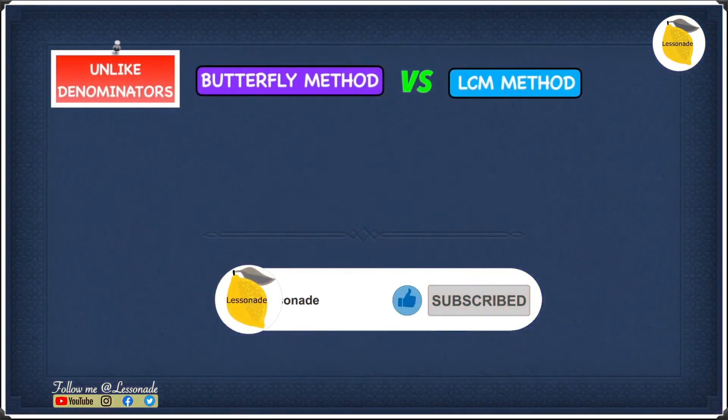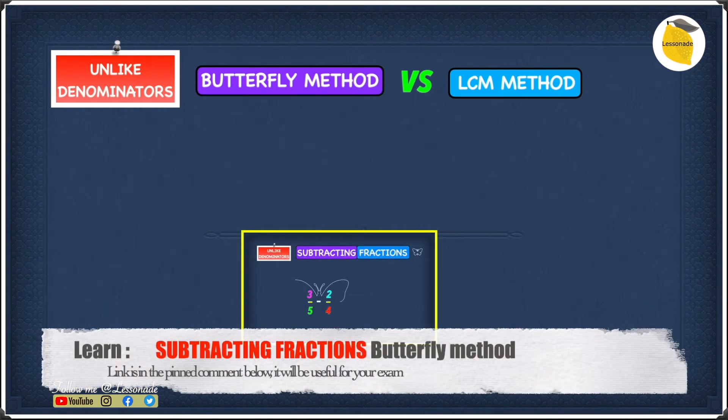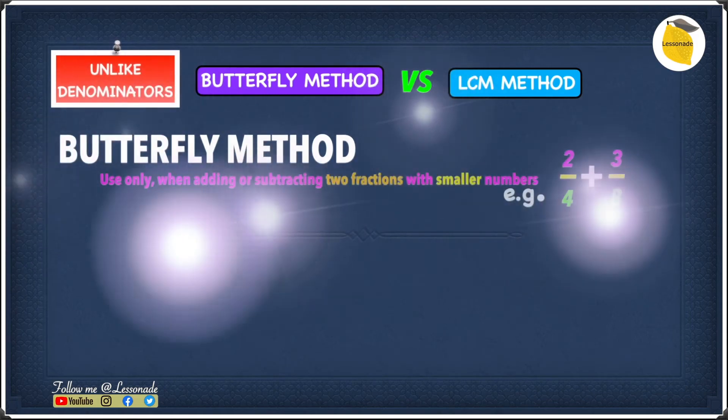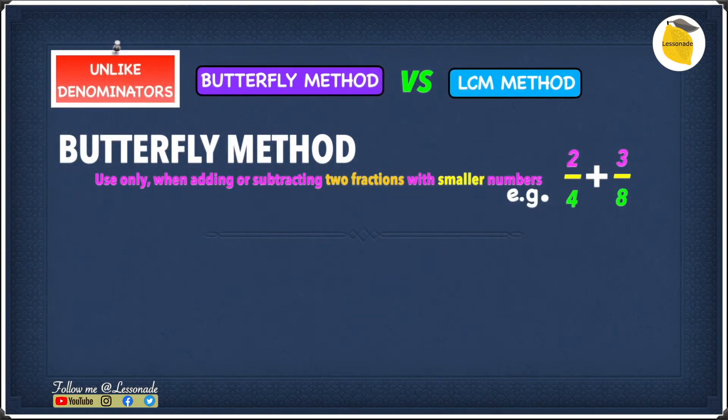You guys might be wondering why we're learning the LCM method and here is why. With the butterfly method you only use it when adding or subtracting two fractions with smaller numbers. For example, if you have two over four plus three over eight, in this case we have smaller numbers so it's much more easier to use the butterfly method.